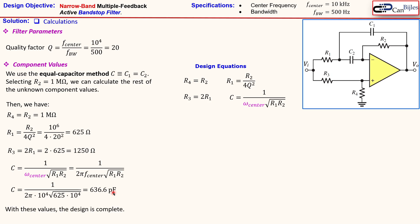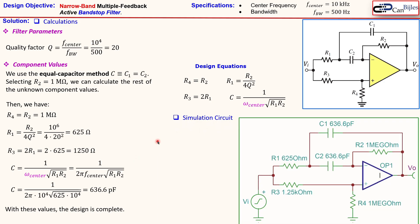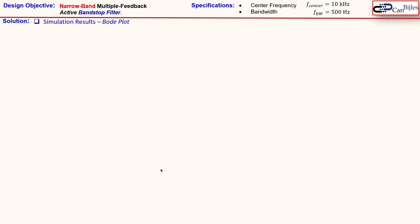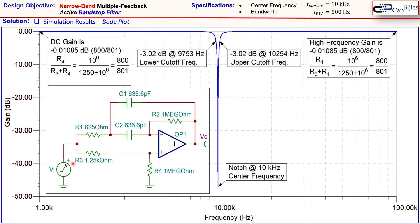The design is now complete. In the simulation circuit you see the op-amp with R2 = R4 = 1 MΩ, R1 = 625 Ω, R3 = 1.25 kΩ, and both capacitors equal to 636.6 pF.